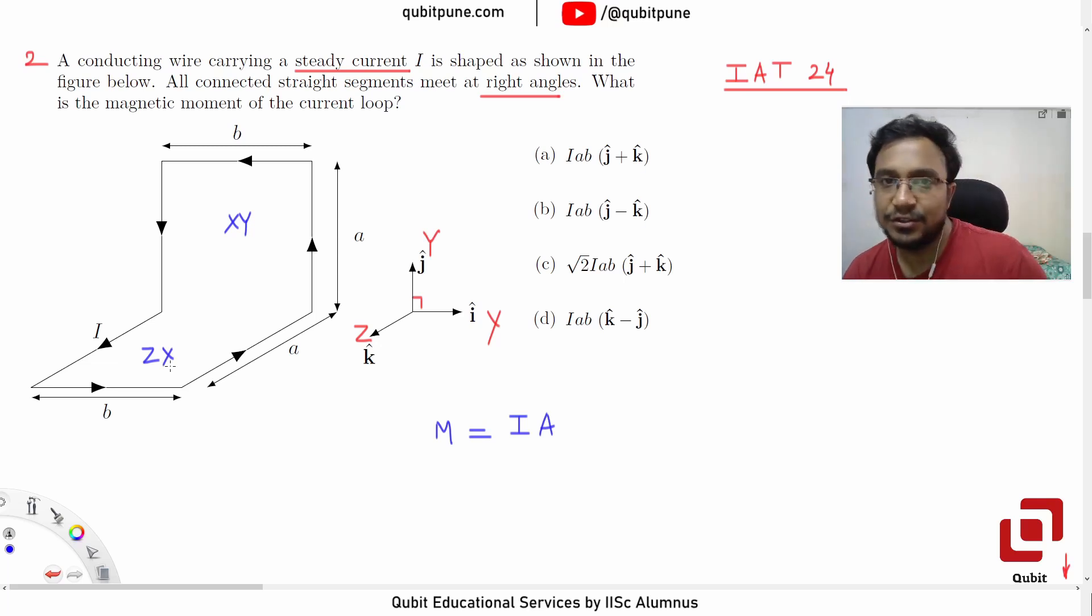So to resolve this issue, like how to find the magnetic moment if we don't have a planar loop, the trick that we bring in is we imagine that this consists of two square loops or two rectangular loops.